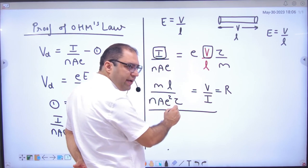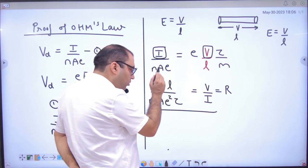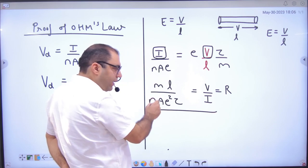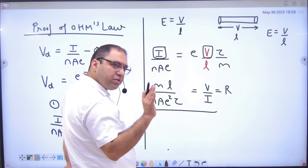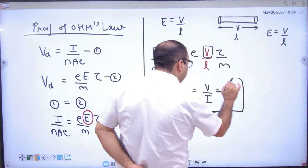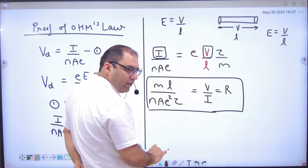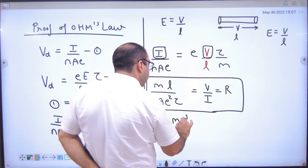V by I equals M L divided by NAE square into Tau. V by I what is? R. Because these are all constants for any wire: mass of electron constant, given conductor length constant, area, E, Tau is all constant for a given conductor provided temperature same, physical condition change, then what will happen? Ohm law proof, R is equal to V by I.